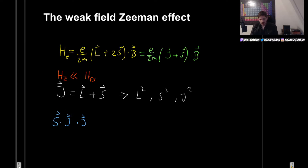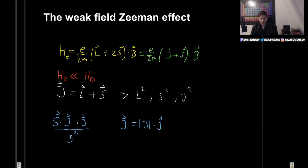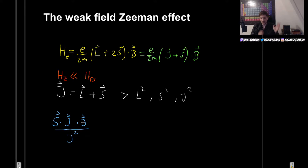We now have two factors of the magnitude of J — one from the dot product and one from multiplying by J again. So we divide by J squared, where J is the magnitude, and that solves our problem. This right here is the formula for the projection of S in the J direction, and that is exactly what we will plug into our Hamiltonian.